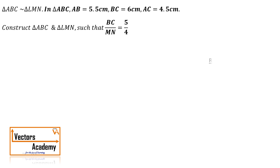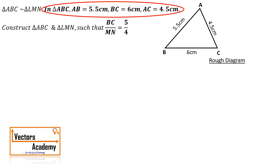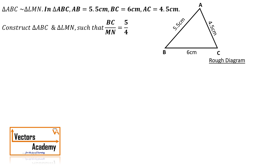We'll start with the construction of a rough diagram. The information about triangle ABC is already given, so we can easily draw triangle ABC by the given dimensions. The other triangle is LMN. Since they are similar triangles, they have equal angles and the same ratio of sides, but the triangle might be bigger or smaller than the given triangle. We can check our ratio — BC upon MN is 5 by 4.